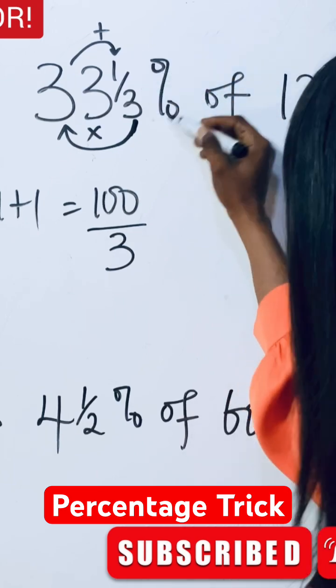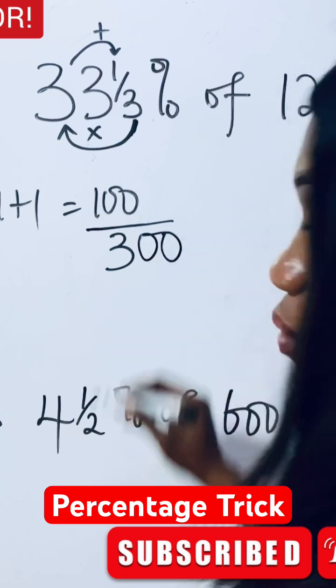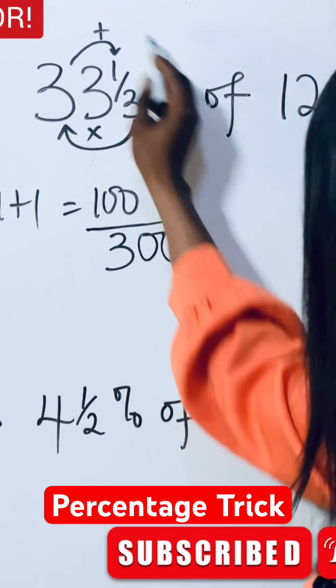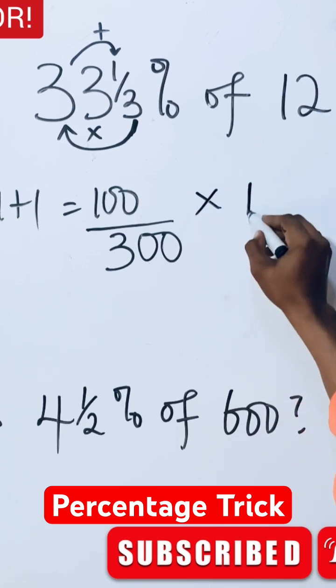So these two zeros in percentage is a fraction, so it has to come down. Did you see what we've just done? So this is the same as this. Of means to multiply, so we're multiplying by 12 over 1.